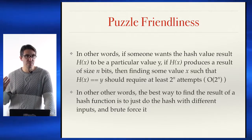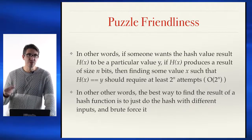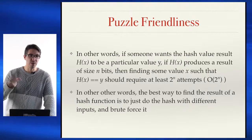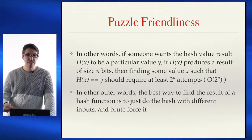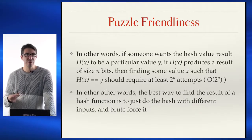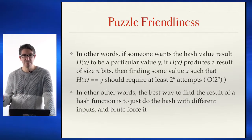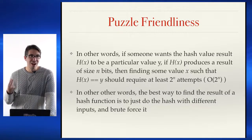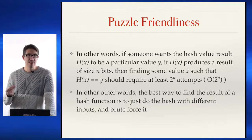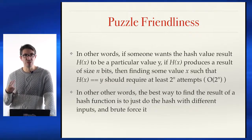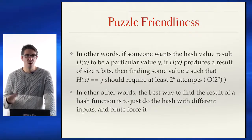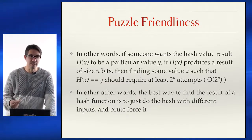If someone wants to produce some particular hash value, and H of X produces a result of size n bits, then they're going to require at least 2 to the n attempts. In other words, the best way to find the result of a hash function is simply to try it — there are no shortcuts.